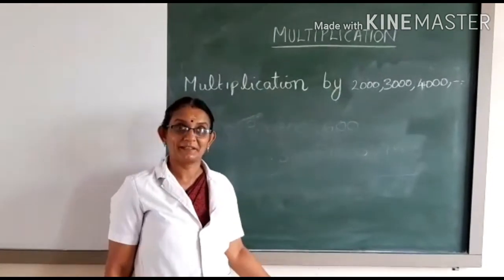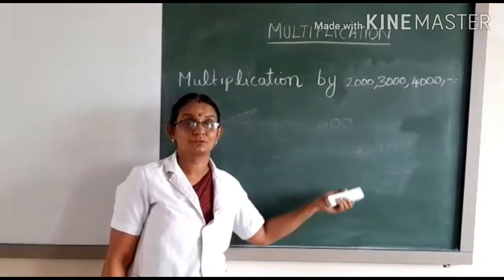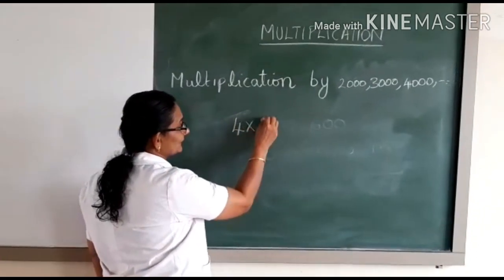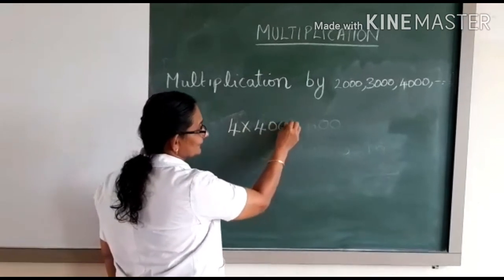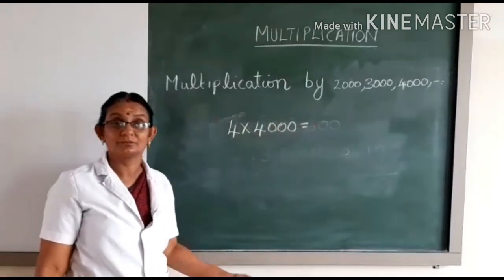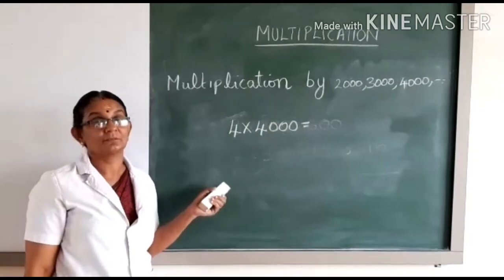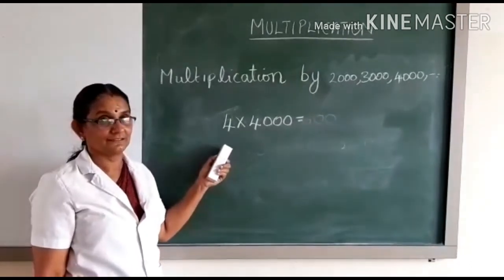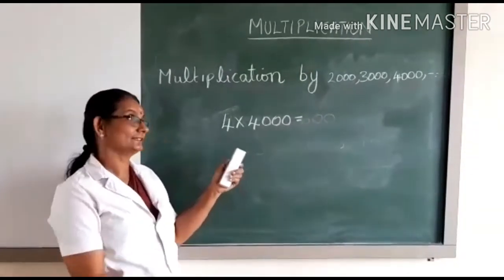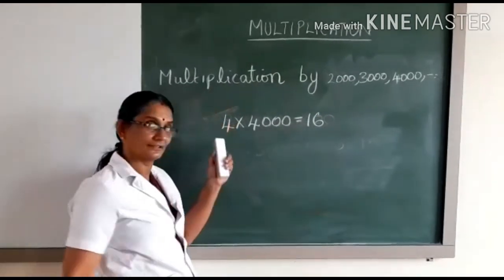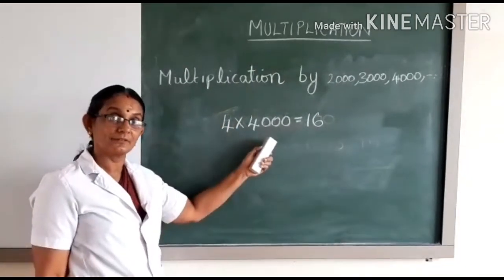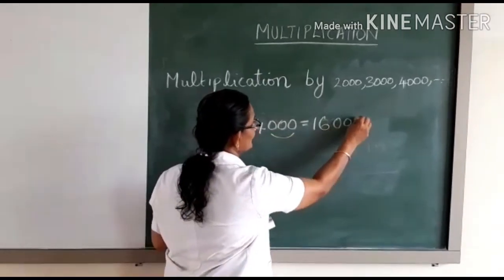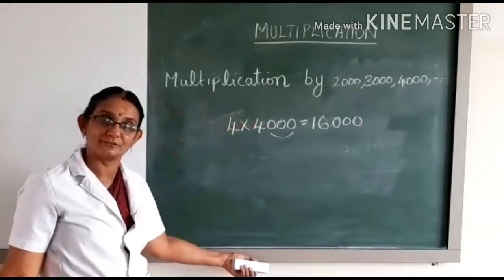Now let us learn to multiply numbers with 2000, 3000, 4000, and so on. It is the same procedure which we have done for the numbers with tens and hundreds. For example, 4 into 4000: what is 4 into 4? It is 16. Then what do we have to do here? Place three zeros to the right of the product, and you get the answer.